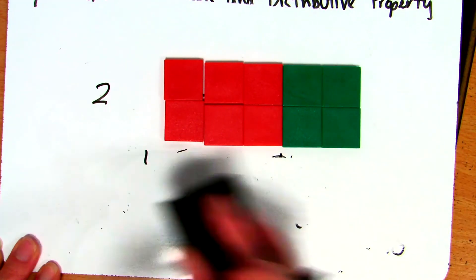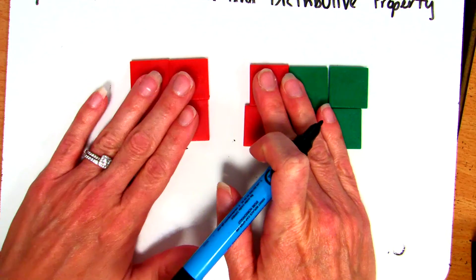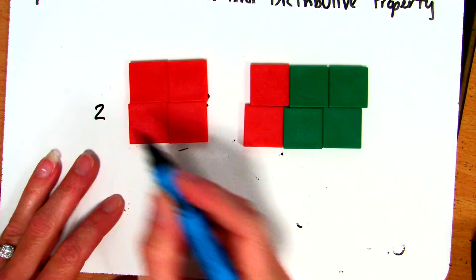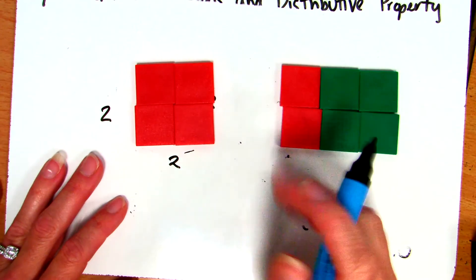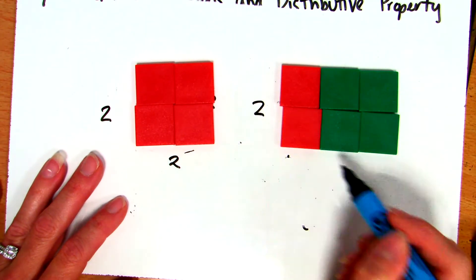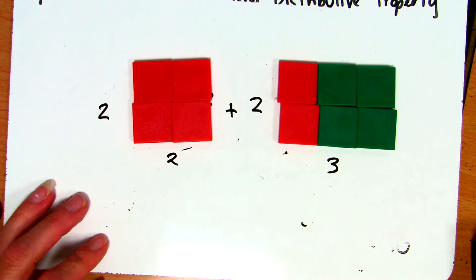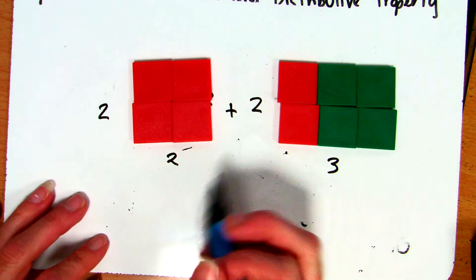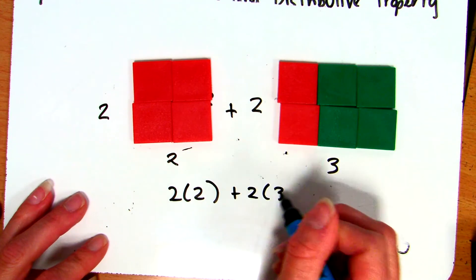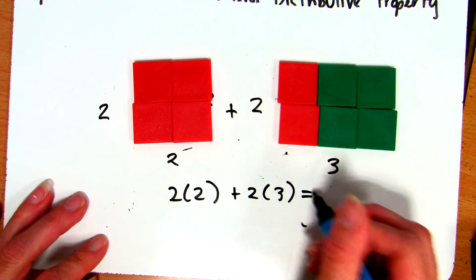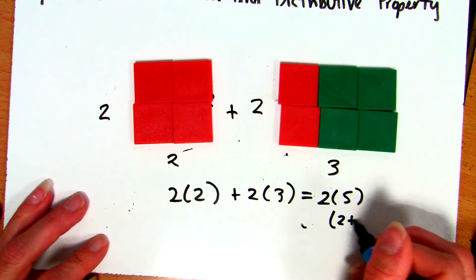Or I could switch it around from the way we had it originally and say 2 rows of 2 plus 2 rows of 3. It's the same thing as before except my 2 by 2 is first and my 2 by 3 is second. So 2 rows of 2 plus 2 rows of 3 is the same as 2 rows of 5, because 5 is just 2 plus 3.